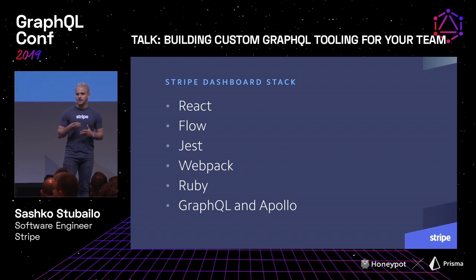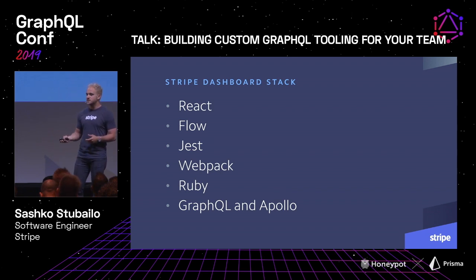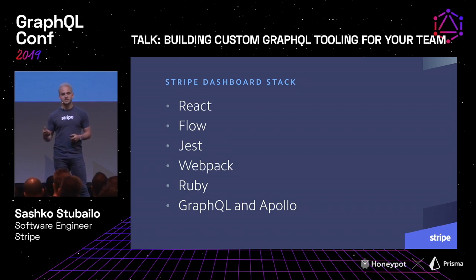We're using a pretty standard front-end stack at Stripe working on the dashboard. We use React, Flow for static typing, Jest for testing, Webpack for our build system. On the back end, we use Ruby — quite well known as a Ruby shop. And most recently, we've added GraphQL and Apollo to that stack for data fetching and our API layer for the front end.